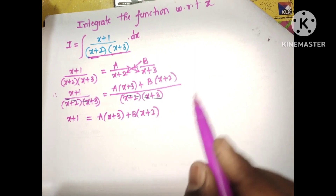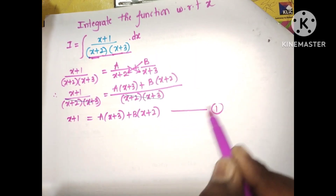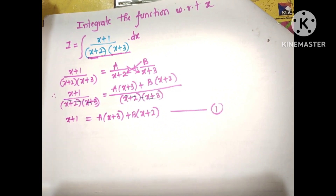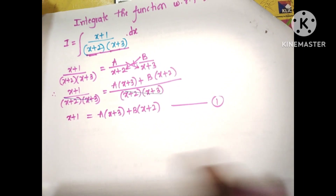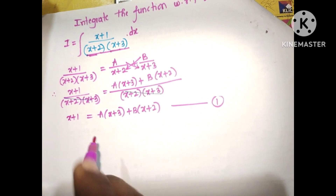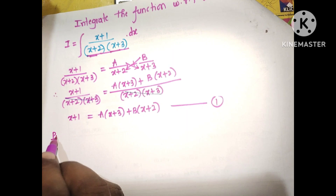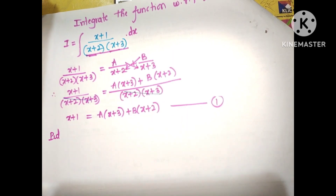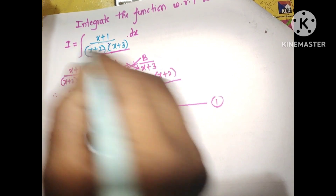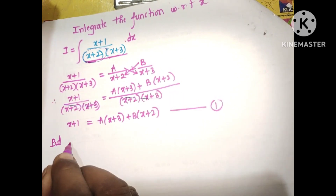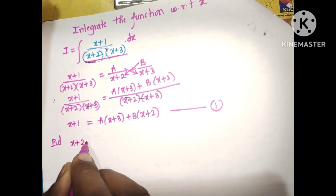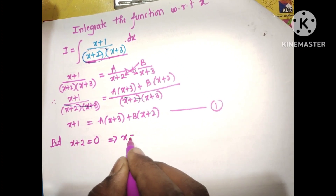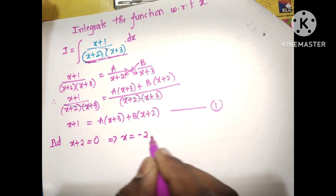This is equation number 1 — a very important step. Now, to find A, put the first linear factor equal to zero: x plus 2 equals 0, so x equals minus 2.